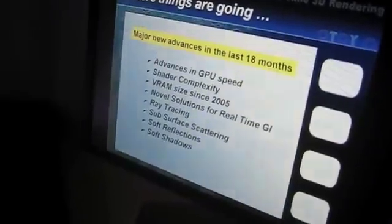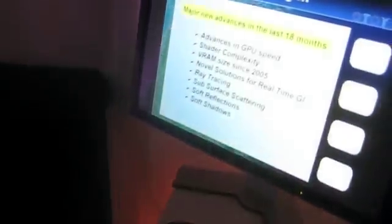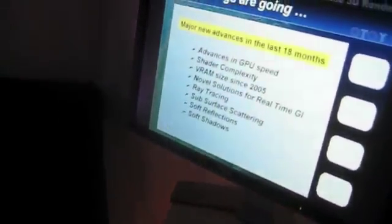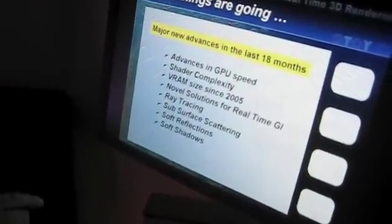Shader complexity now rivals what you can do on the CPU, VRAM sizes are big enough now — really equivalent to what you can get on the CPU as well. We've had to come up with essentially parallelized ways of rendering: doing ray tracing, global illumination, all these things in parallel to essentially capture the quality you want to see in a final offline rendering and do it in real time.